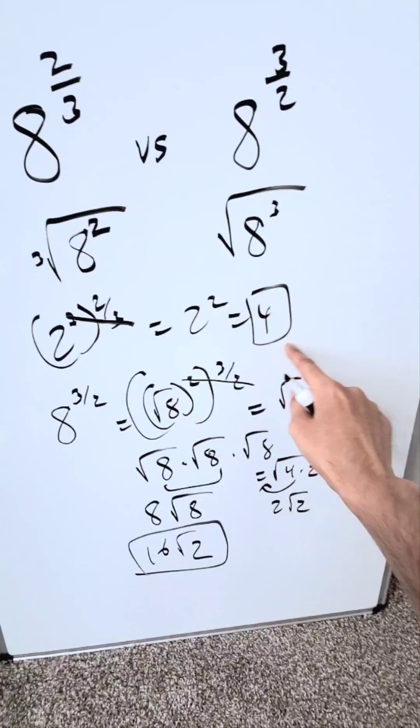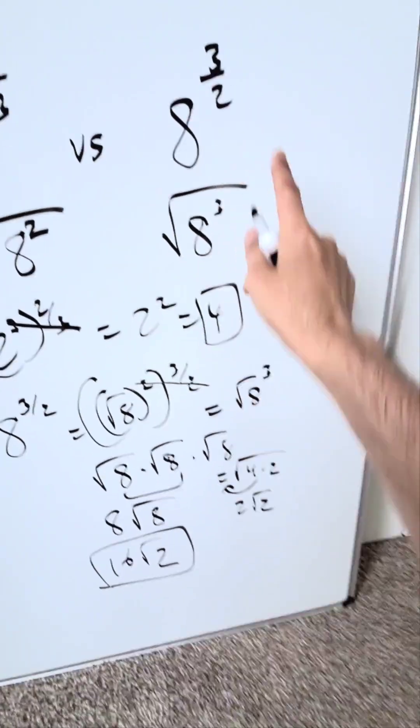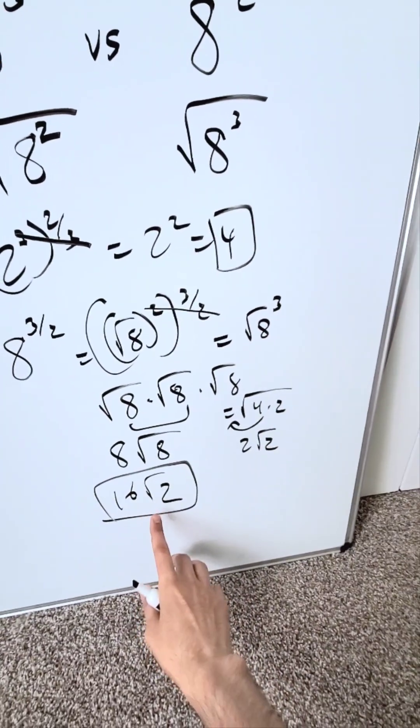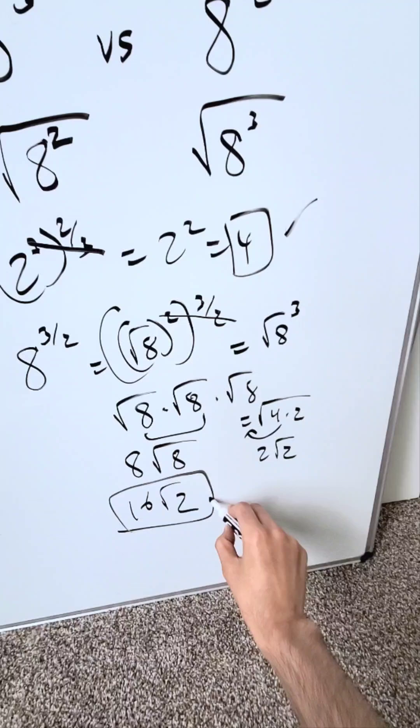When you look at this first term, your output is a 4. When you look at the second term, your end result here is 16 root 2 but both of these end result answers are good.